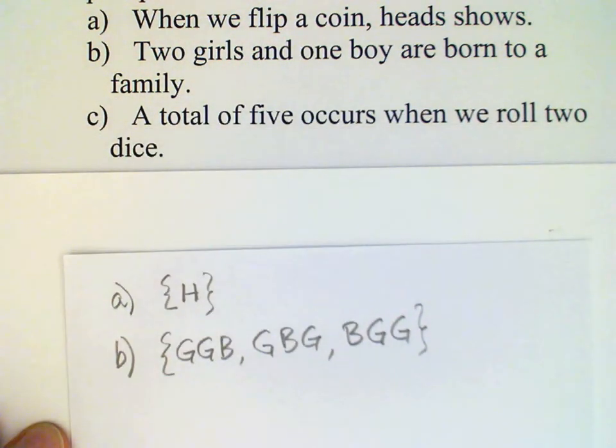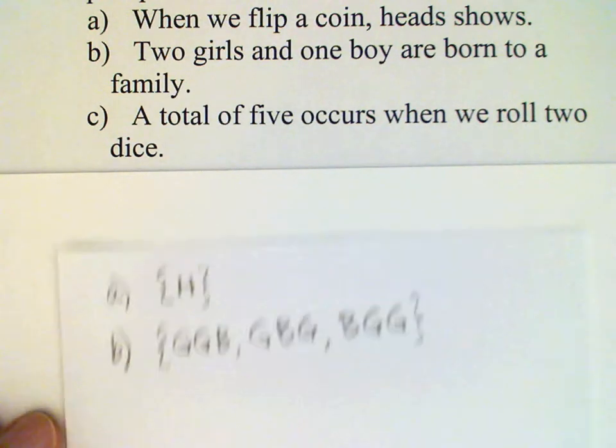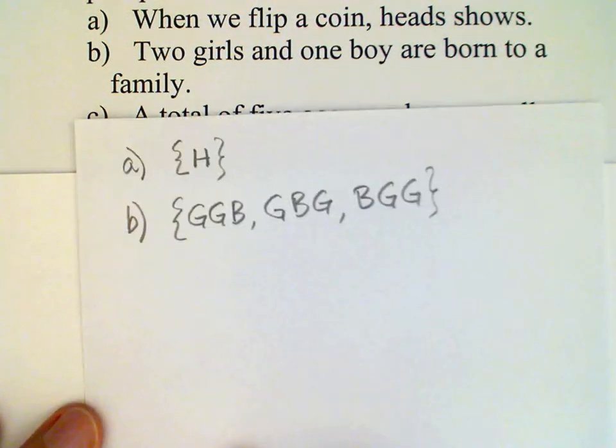Part C: A total of five occurs when we roll two dice. Remember when we roll dice...